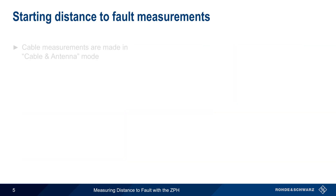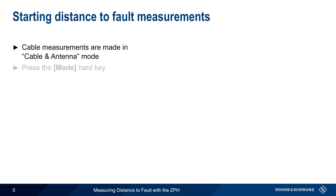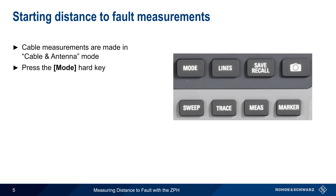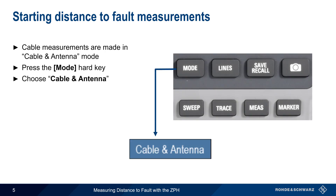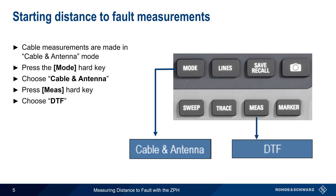On the ZPH, distance to fault measurements are made in Cable and Antenna mode. To enter this mode, press the Mode hard key on the front of the ZPH, and then choose Cable and Antenna from the list of available options. Next, press the Measure hard key, and select DTF, in order to configure and run distance to fault measurements.